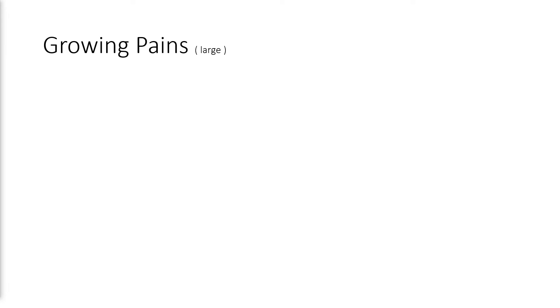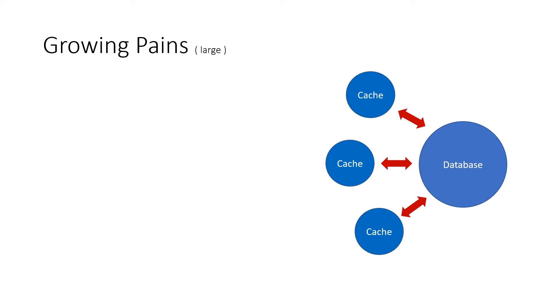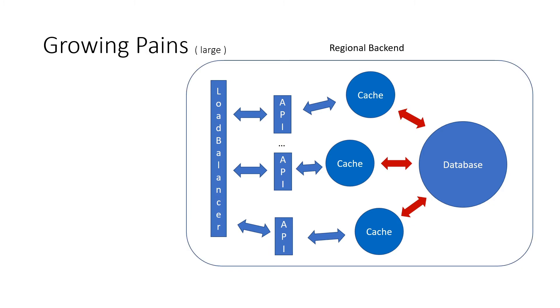Okay, so what does this look like on paper? There will always be a database at the heart of it. But this database will be supplemented with caches. APIs, or microservices, will interact with these caches. Some sort of load balancer will distribute traffic to our microservices. This becomes a regional backend. One of many.